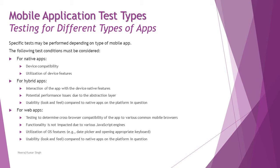Usability — including look and feel compared to native apps — must also be tested for hybrid apps. For example, iPhones and Android each have different navigation options, and the app must feel appropriate on each platform, including user-friendliness and usability testing.